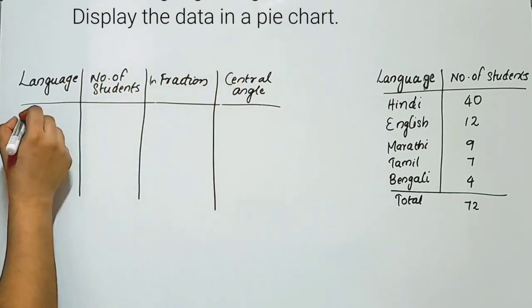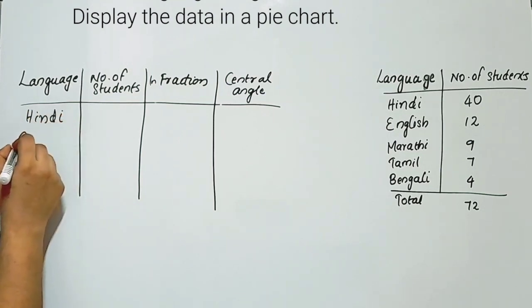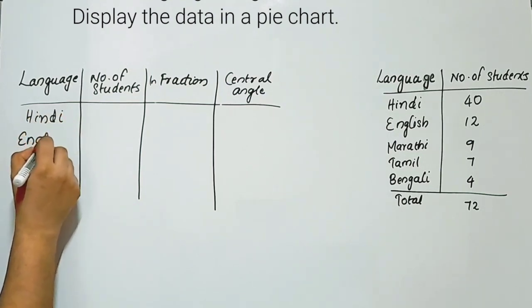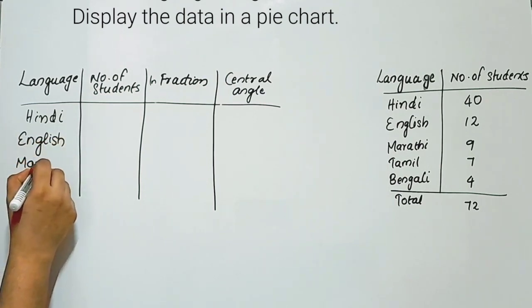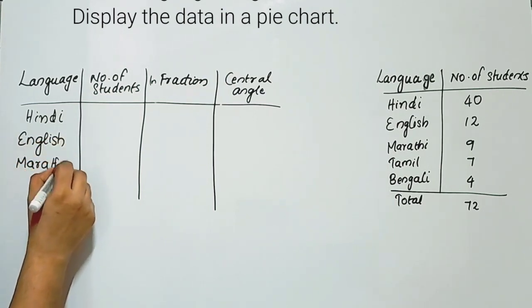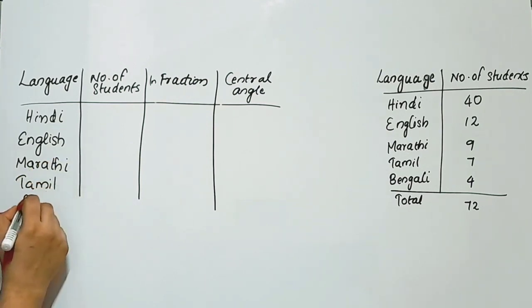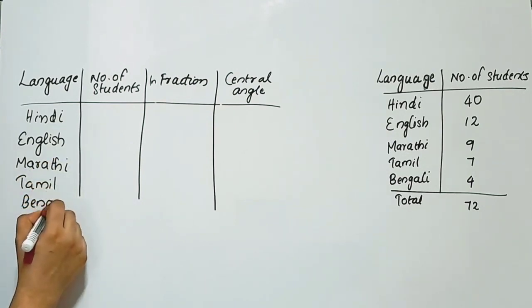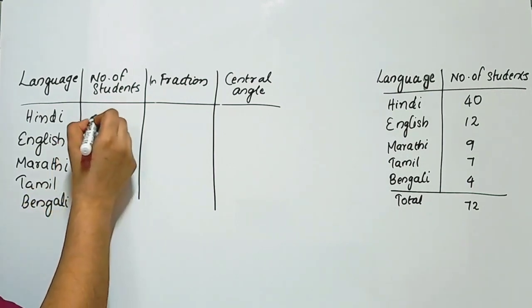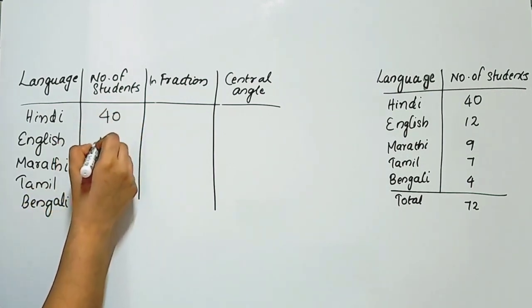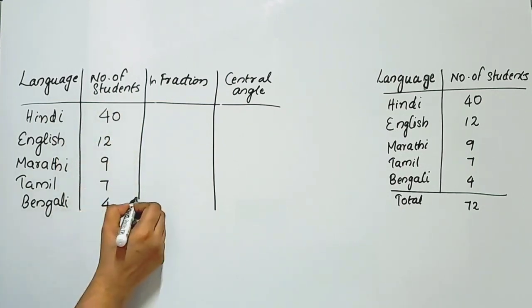The languages are: Hindi, English, Marathi, Tamil, Bengali. The number of students for each language is: 40, 12, 9, 7, 4.